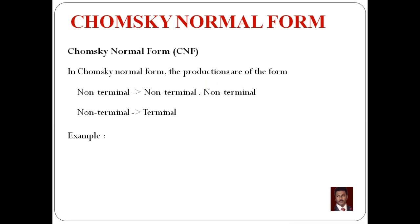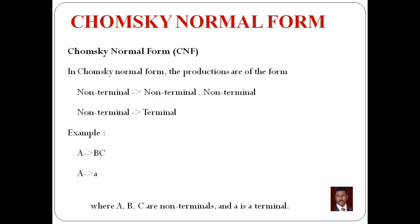In this format, there are productions such as A tends to BC, where the right side has two non-terminals, and A tends to e, where there is one single terminal. This is the CNF definition.